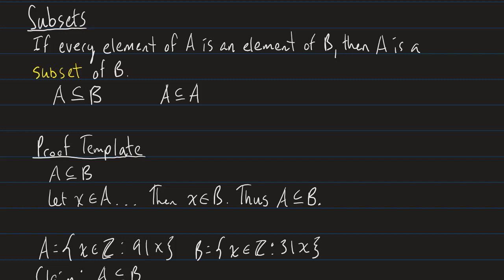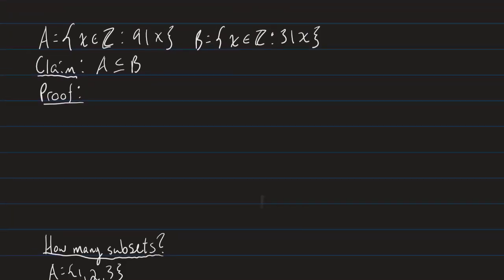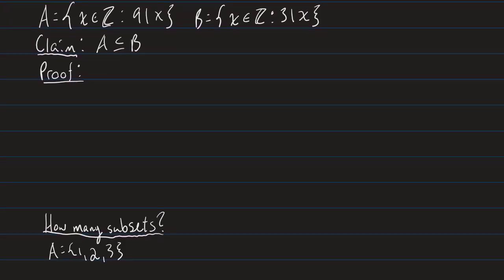I've defined two sets A and B. A is the set of all integers X such that 9 divides X, and B is the set of all integers X such that 3 divides X — using our set-builder notation from last time. I claim that A is a subset of B, but you can't just claim things in math; you have to prove them. If you're taking a discrete math or intro to proofs class right now, I highly encourage you to pause the video and spend 5 to 10 minutes trying to prove this yourself.